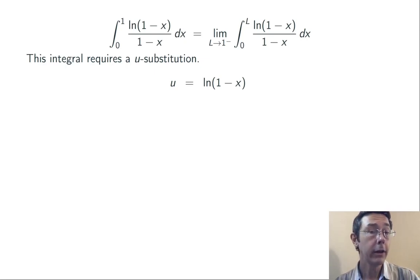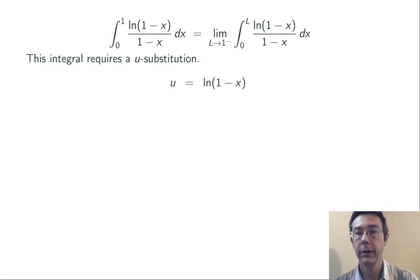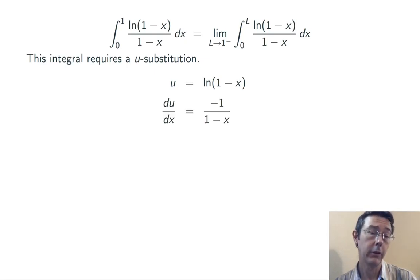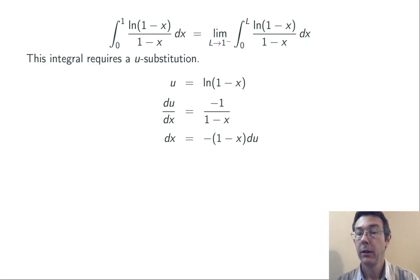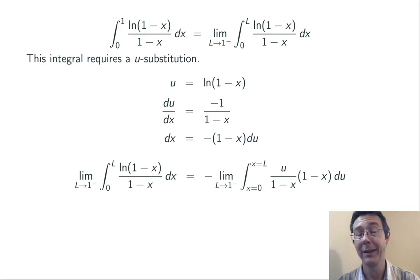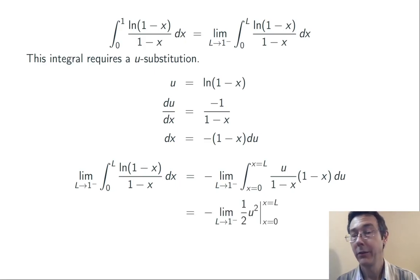Now we just need to compute. To integrate natural log of 1 minus x over 1 minus x, we need a u-substitution. Setting u equal to the natural log of 1 minus x is natural because its derivative — 1 over 1 minus x — is a factor in the integrand. The derivative du/dx is negative 1 over 1 minus x, the negative 1 coming from the chain rule. Solving for dx gives dx equals negative quantity 1 minus x du. Substituting in, we replace the natural log with u and dx with negative (1 minus x) du, factoring the negative sign outside the limit. The 1 minus x cancels, and we're just integrating u to get one half u squared.